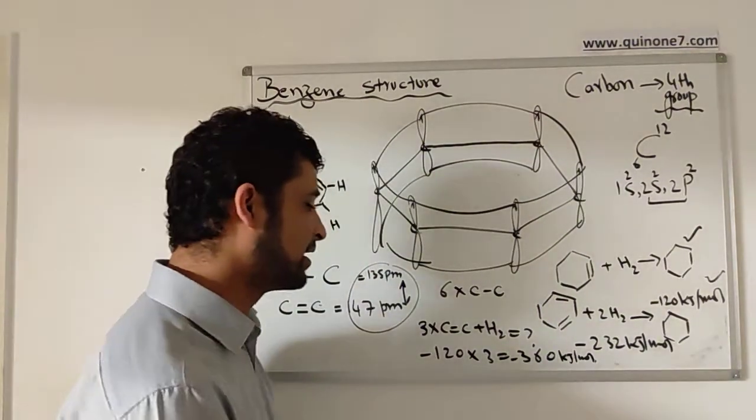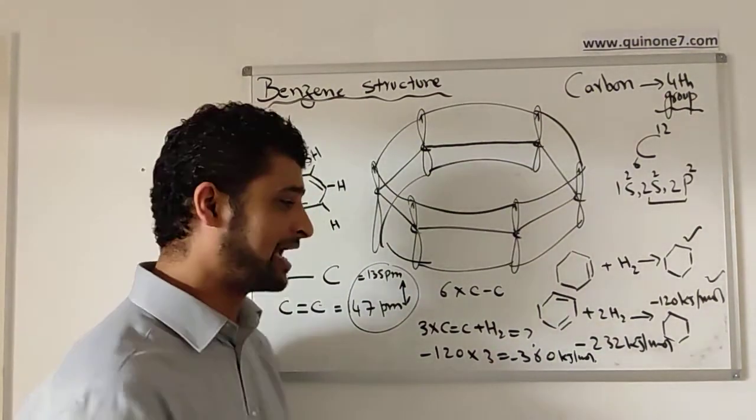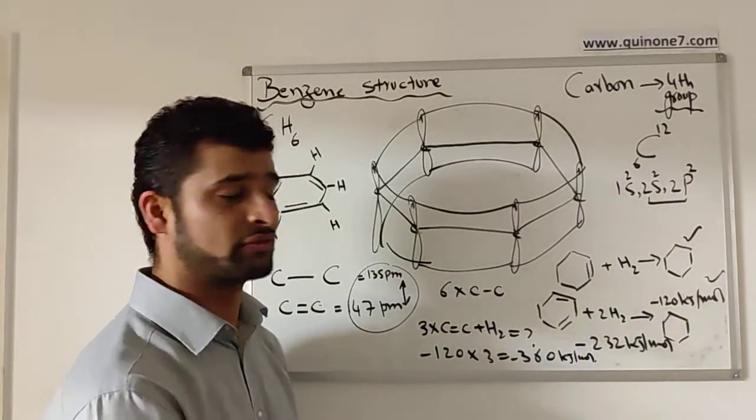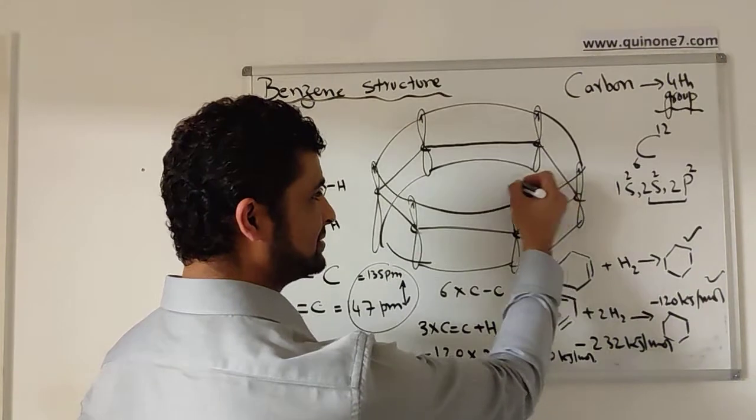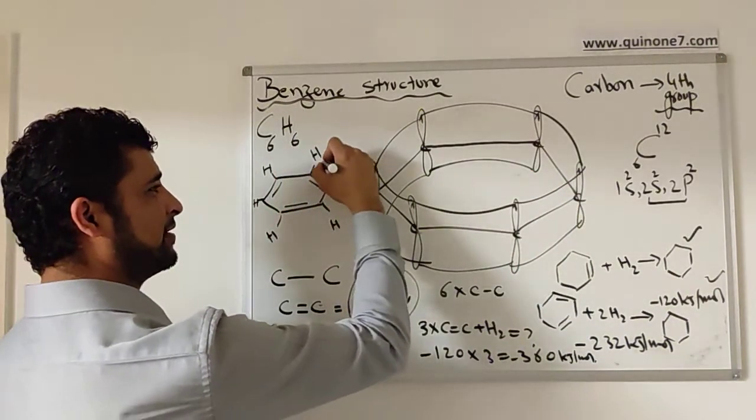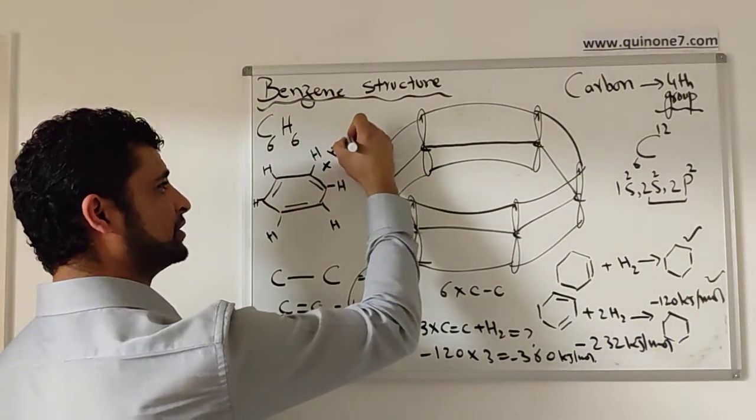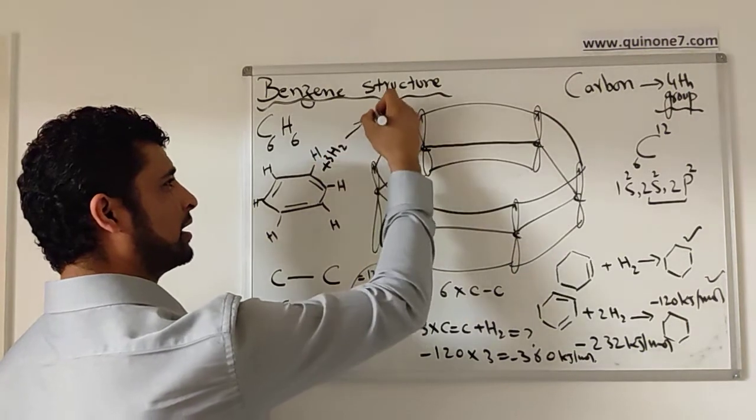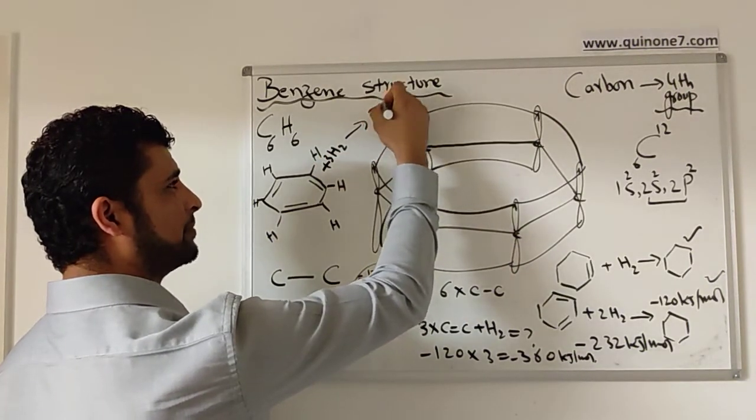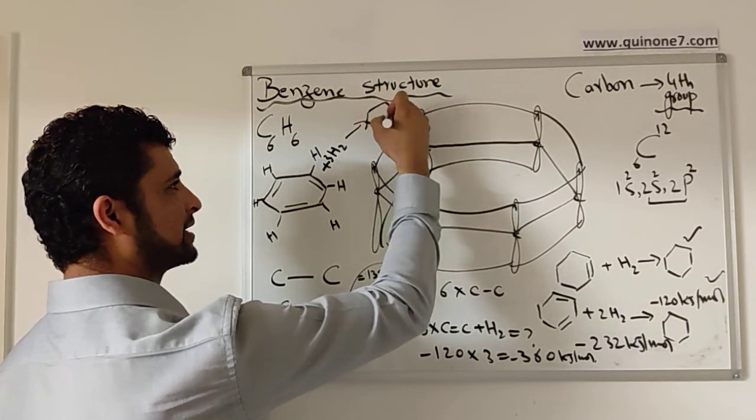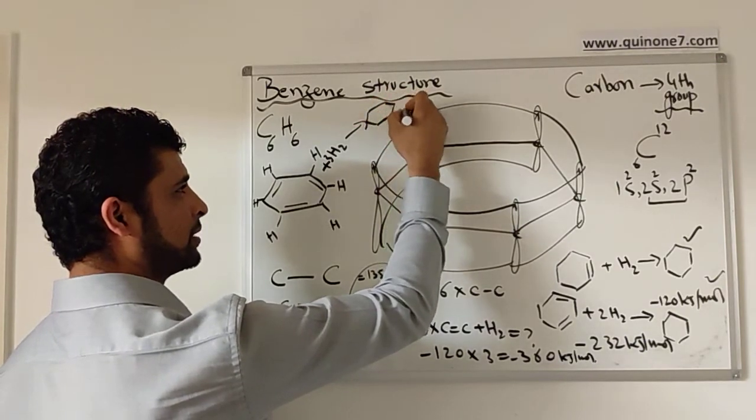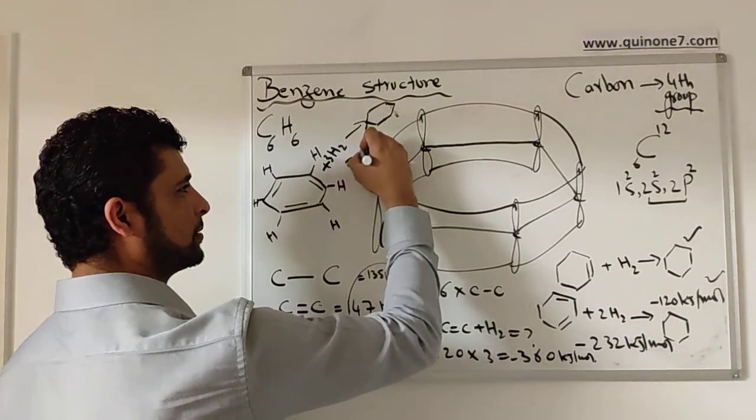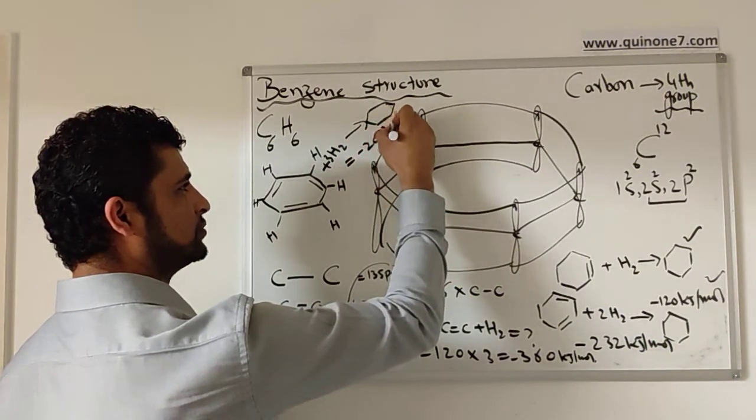When they actually looked at the evidence, the energy which actually comes out - because it is an exothermic reaction - is actually -208. For benzene itself, if you do hydrogenation to make cyclohexane, it was -208 kilojoules per mole.